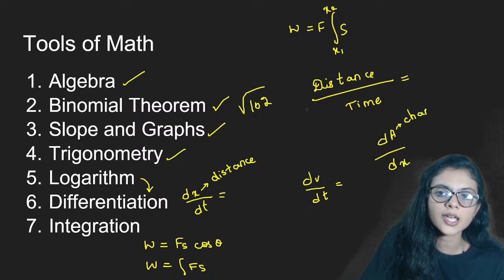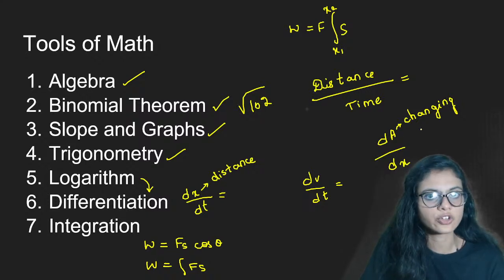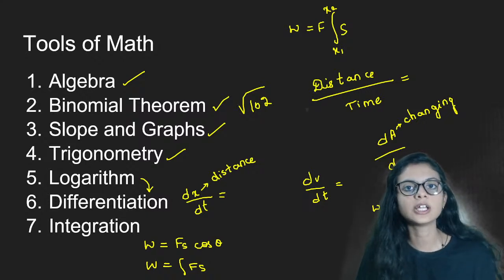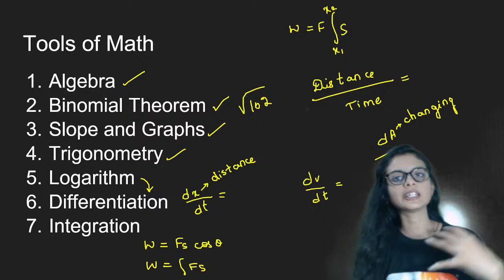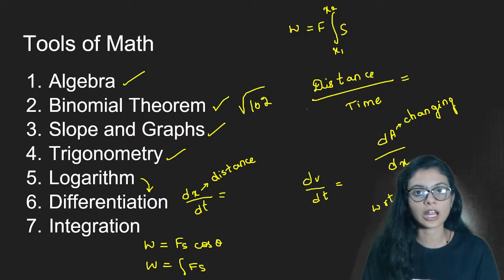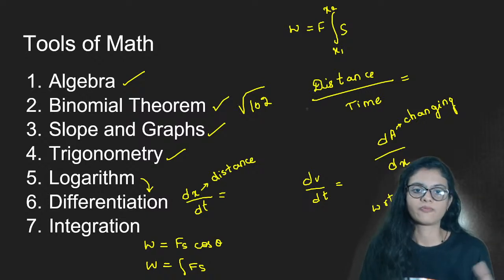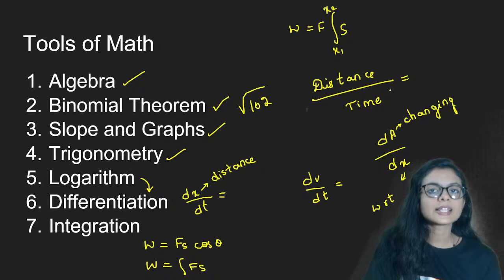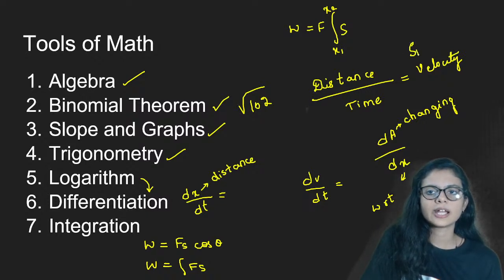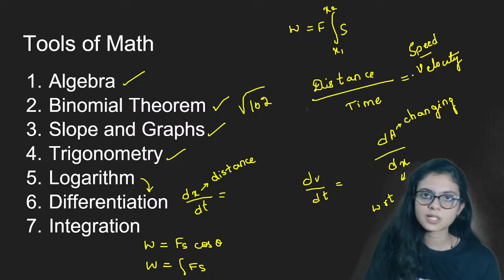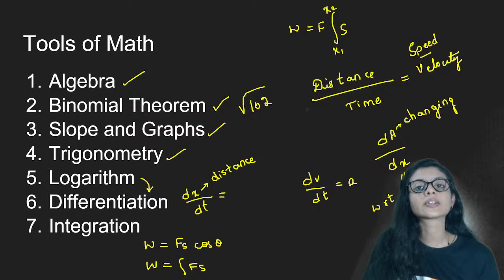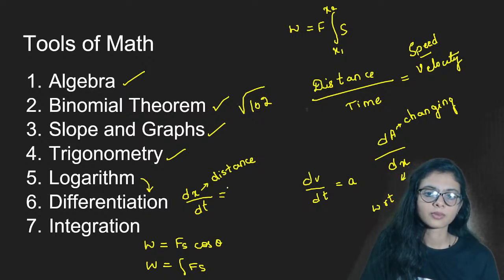dx/dt - distance by time - is nothing but velocity. Or if you don't want to say velocity you can say speed, since displacement gives velocity and distance gives speed. Differentiating velocity with time gives acceleration, because acceleration is rate of change of velocity. That simple. Integration is used not only in work done but in many places in physics - it's an important concept.